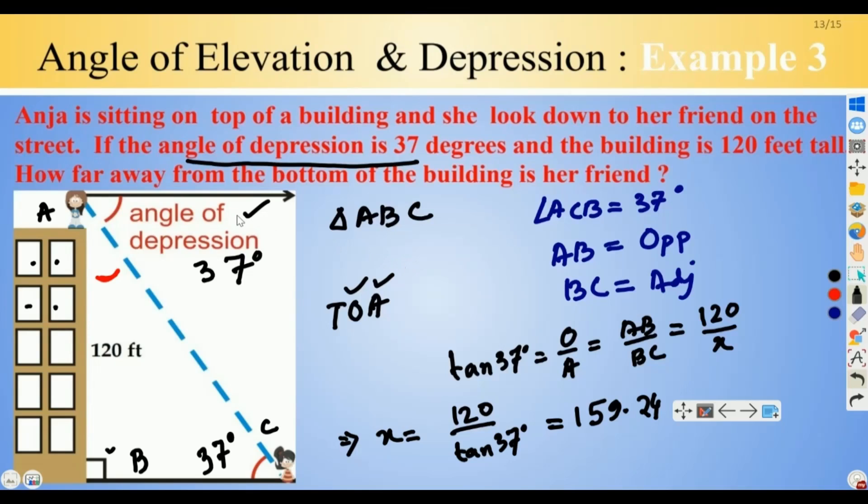We obtain 159.24, rounding up to two digits. Just to recall, this problem is one that trips a lot of students up because you don't take the time to draw this horizontal line. If you don't put this horizontal line, it is very easy to put the 37 degrees in the wrong place. But that will be a completely different triangle and you will end up with a wrong answer. So be careful about that, and when you are doing an angle of depression, always draw this horizontal line.